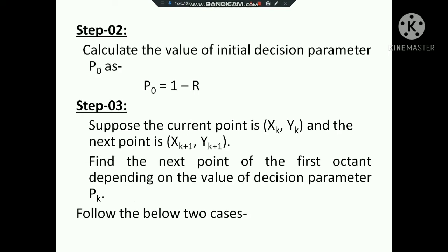At the next step, you have to calculate the value of the initial decision parameter. This is the decision parameter P0, which is equal to 1 minus R, where R is the radius of the circle. The next step is: suppose the current point is (xk, yk) and the next point is (xk+1, yk+1).